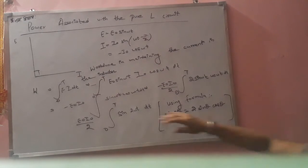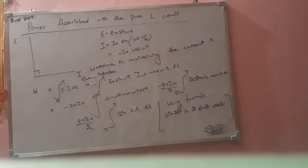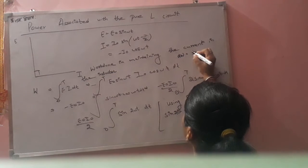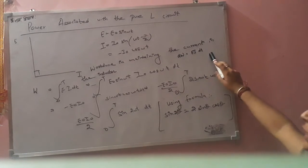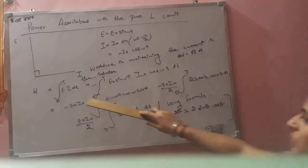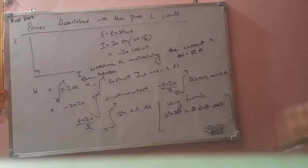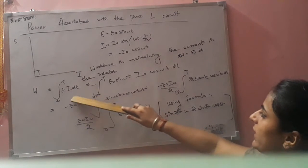So here we are talking about work done by the source in dt time: dW is equal to E·I·dt. For total work done, we have to integrate this equation. Total work done is the integration from 0 to T of E·I·dt.